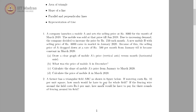The data provided: there is a company selling mobile phones, beginning in March 2019. The selling price of Mobile A was 8000 rupees from March until June. After that, due to increasing demand, the company decided to increase the price by 250 rupees every month. This went on until a new Mobile B was launched at a lesser price in January, and because of this the selling price of A dropped at a rate of 500 rupees per month from January till March 2020.